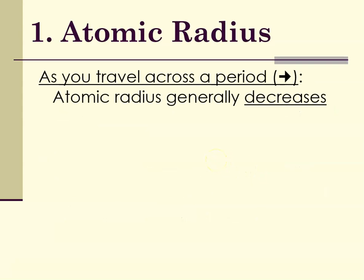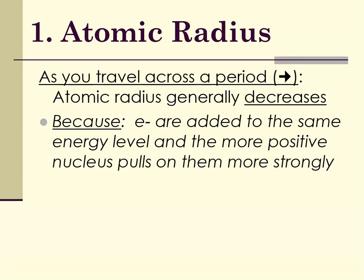As you travel across a period, the atomic radius decreases. As you go across a row from left to right, atomic number is increasing. But if you're in the same row, you're not adding any new levels, so you're at the same principal energy level. As you're adding electrons, you're also adding protons to the nucleus. The more protons in the nucleus, the more it acts like a stronger magnet, and that increased pull pulls the electrons in closer. So the increased nuclear charge is pulling the electrons in more strongly.